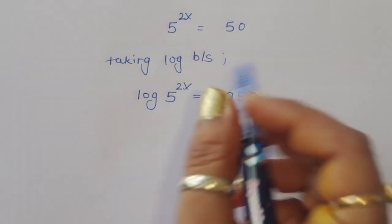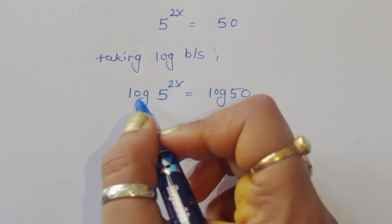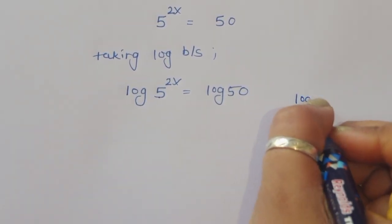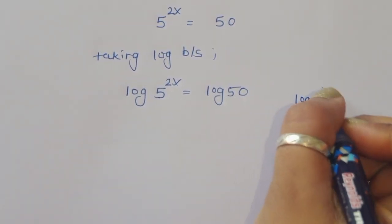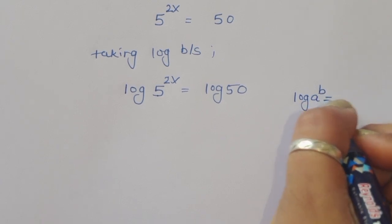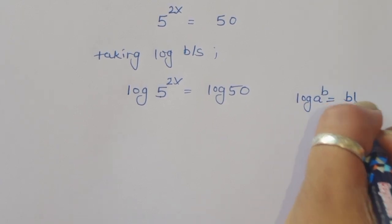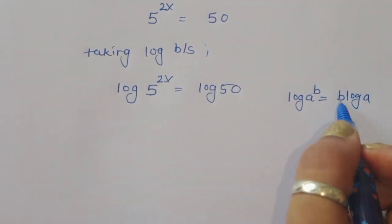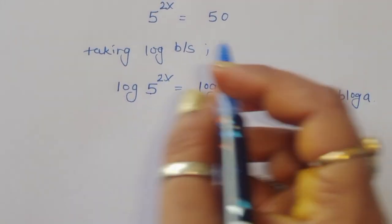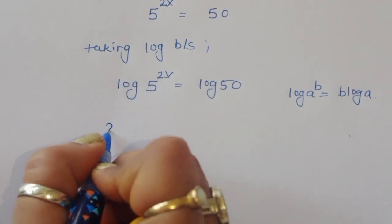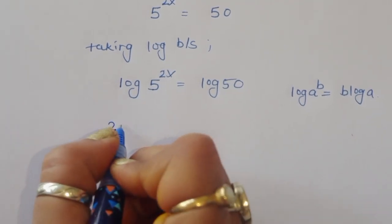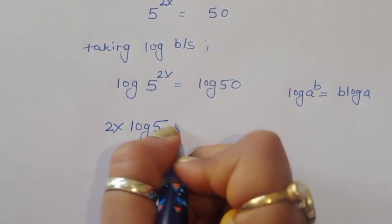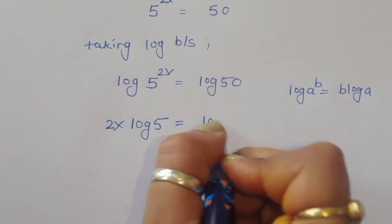Now log of a^b — this is the form log(a^b) = b·log(a). So using this formula we will get 2x·log(5) is equal to log(50).